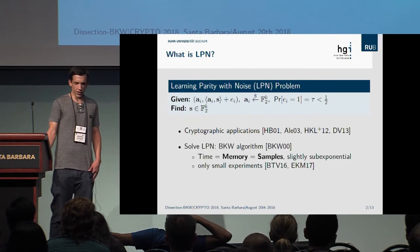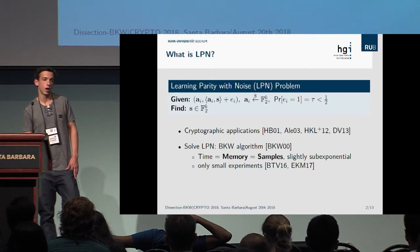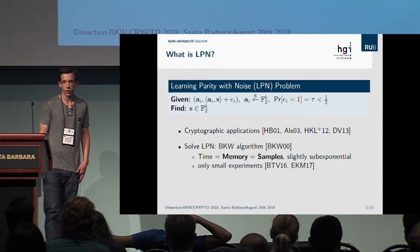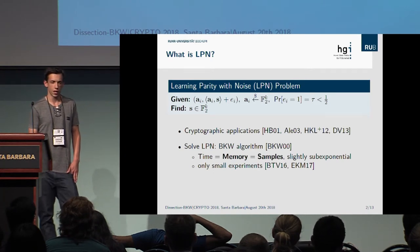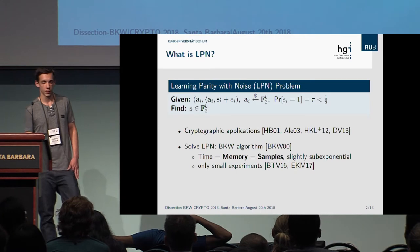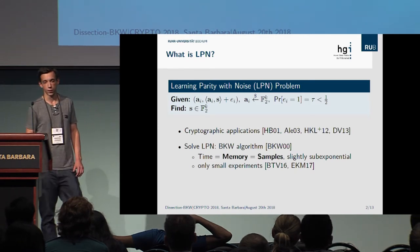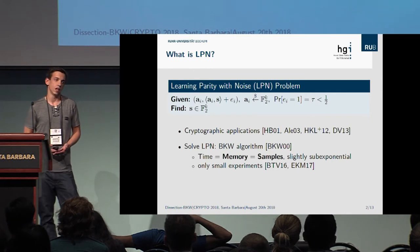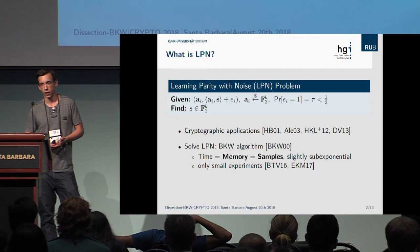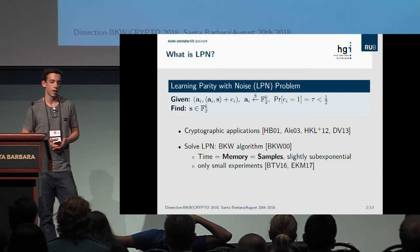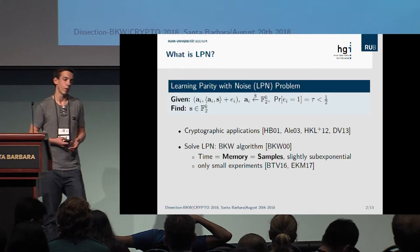The state-of-the-art algorithm to solve the LPN problem is the one by Blum, Kalei, and Wassermann from 2000. This algorithm has the advantage of a slightly sub-exponential runtime, while it has the drawback of memory and sample complexity as high as the time complexity — so slightly sub-exponential. This makes the algorithm quite impractical. There have been some experiments done in 2016 and 2017, but all were restricted to a very small dimension due to the huge memory requirement.